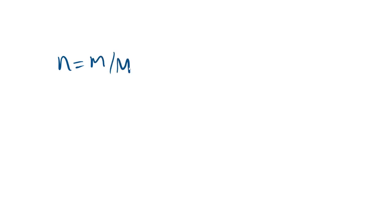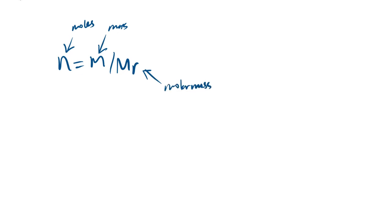Starting with our molar equations — you should know these off by heart. n equals m over Mr: moles equals mass of the substance divided by Mr, which is our molar mass. For units: mass in chemistry is in grams (excluding certain topics like time-of-flight mass spec, where it's in kilograms), and molar mass is in grams per mole.